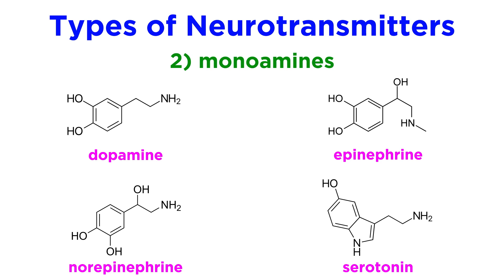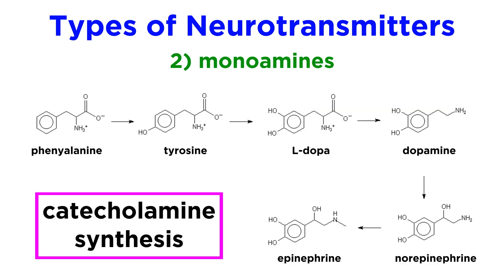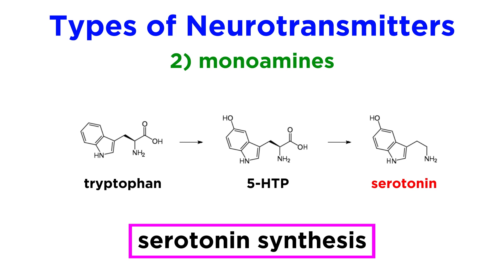Next there are the monoamines. These are derived from amino acids as well, and they are the most familiar ones: dopamine, epinephrine, norepinephrine, and serotonin. The first three are categorized as catecholamines, while serotonin qualifies as an indolamine. The catecholamines are all synthesized by enzymes from tyrosine, which is converted in a series of steps into L-dopa, then dopamine, then norepinephrine, and then epinephrine. By contrast, serotonin is synthesized from tryptophan. We can clearly see the differences in structure.